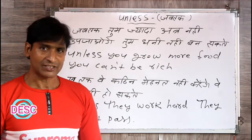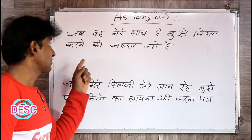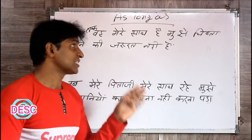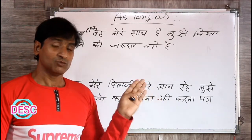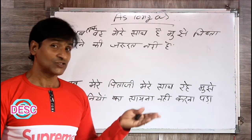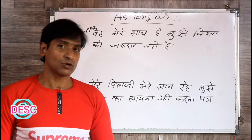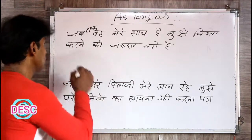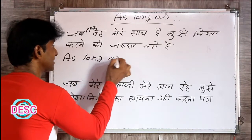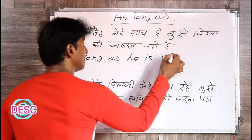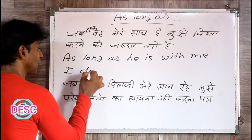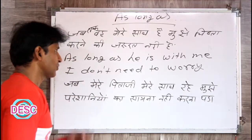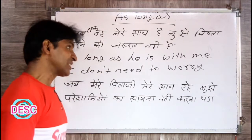Ab hum As Long As ka istemal dekhenge. Jab tak woh mere saath hai, mujhe chinta karne ki zaroorat nahi hai. This sentence has no negative in it — unlike Unless which was negative. Here it is positive: as long as he is with me, I don't need to worry. As long as he is with me, I don't need to worry. Simple — jaise sentence bol raha hai, waise banao, but add As Long As where you see 'jab tak'.